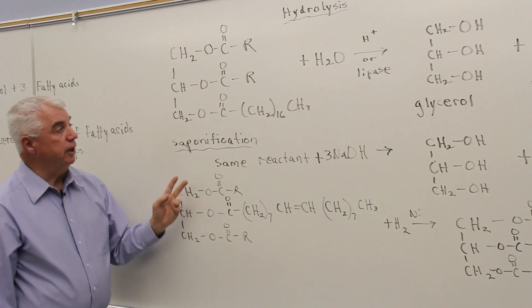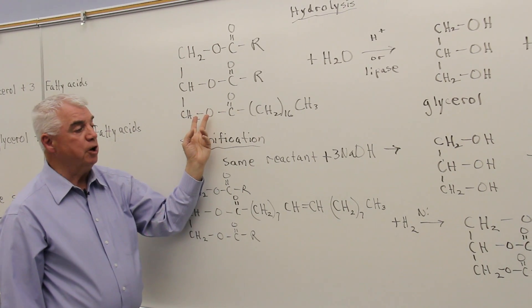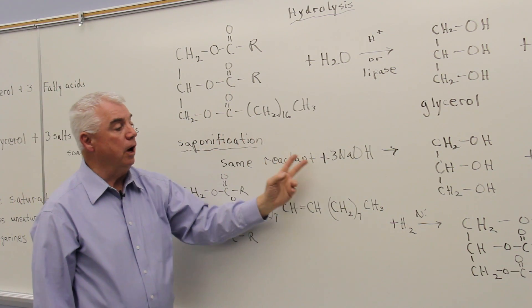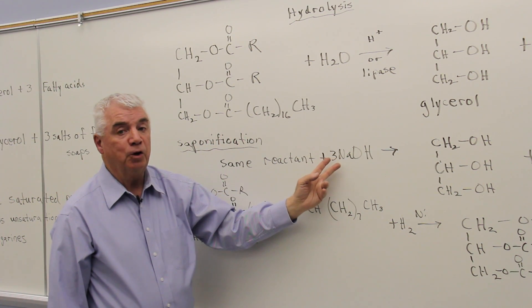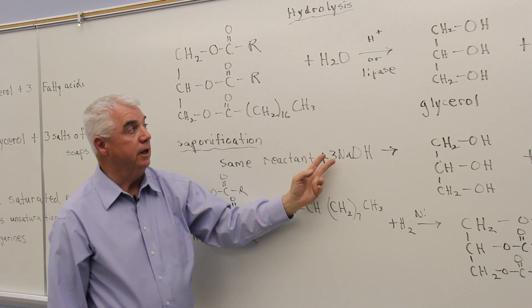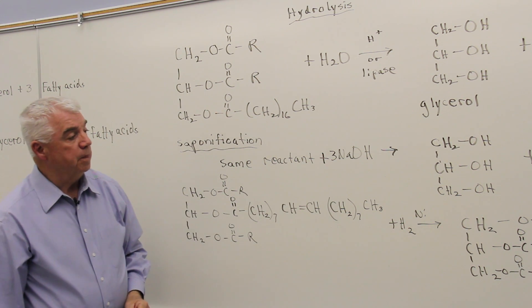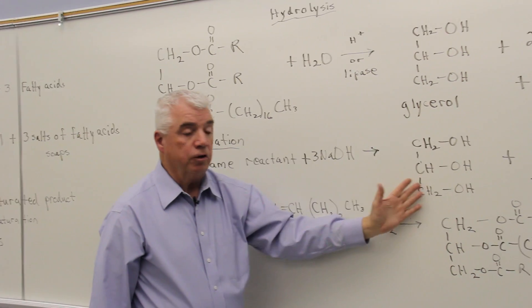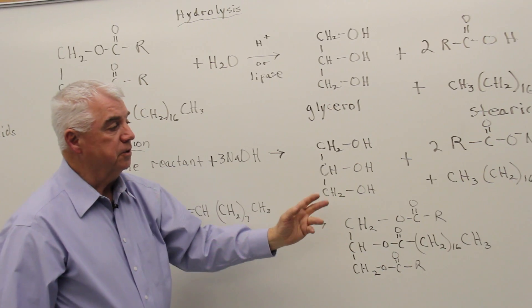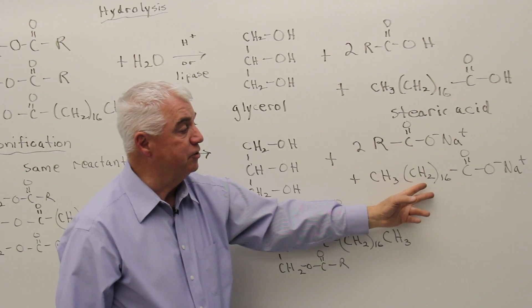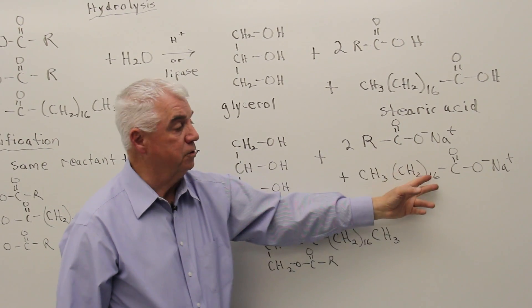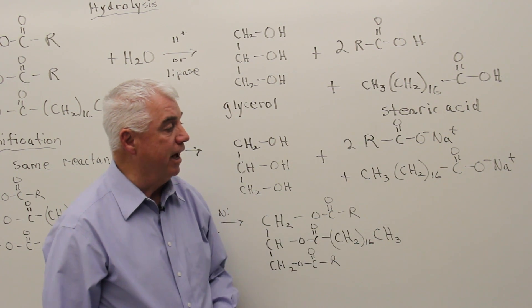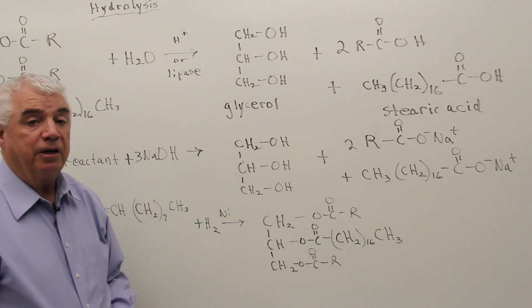In saponification, we use the same starting material, but instead of just acid, we add three molecules of sodium hydroxide. Again, the ester linkages are all broken, so we get a molecule of glycerol. Instead of getting the free fatty acids, we get the sodium salts of the fatty acids — here's that long chain fatty acid salt that would make it a good soap.